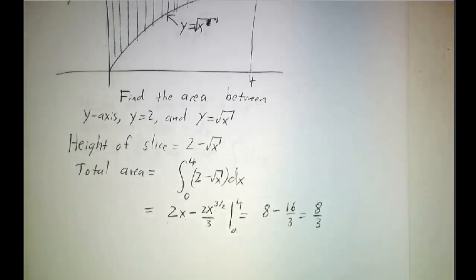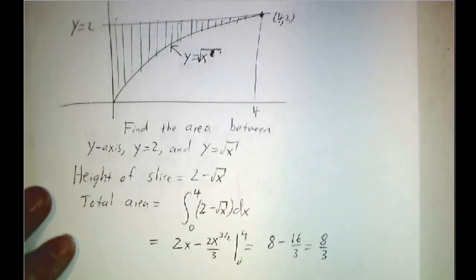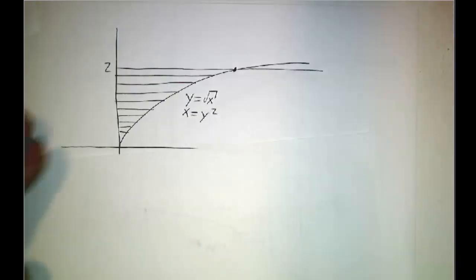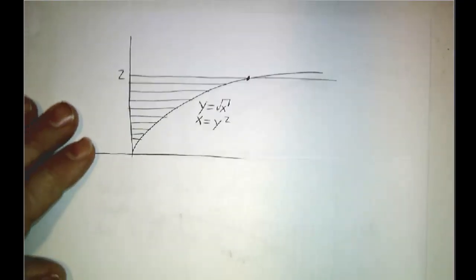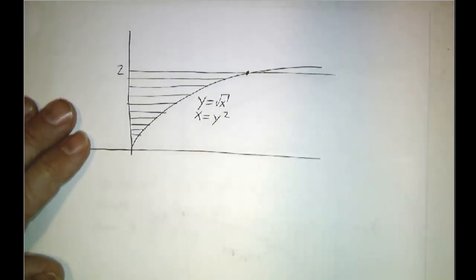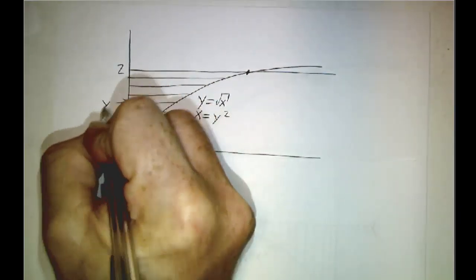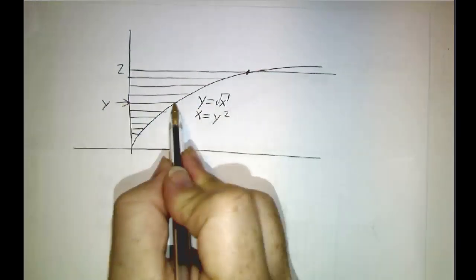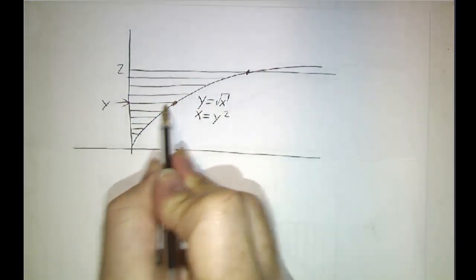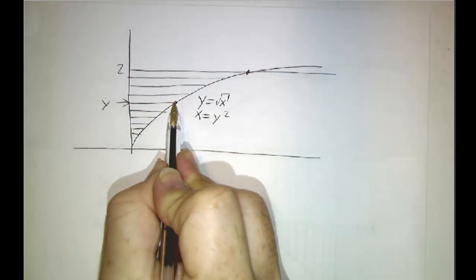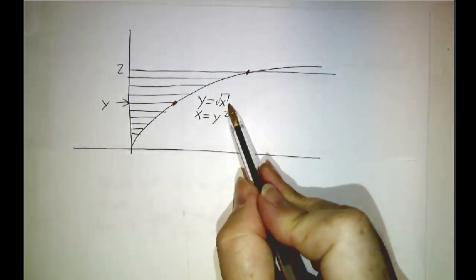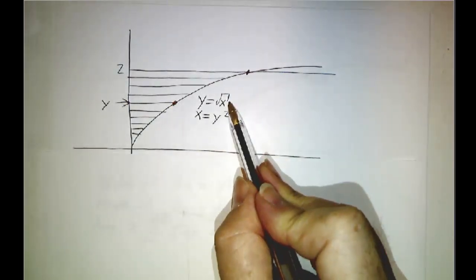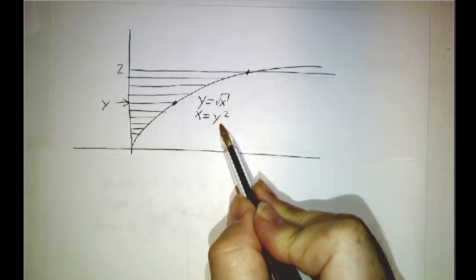There is an easier way. There's a way that gives you an easier integral. If instead of slicing vertically, we slice horizontally, we have to say, at each height y, what's the width? What is the value of x that corresponds to this value of y? Well, instead of writing this curve as y equals square root of x, we can write it as x equals y squared.